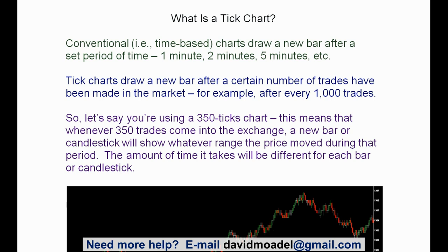Tick charts, on the other hand, draw a new bar or candlestick after a certain number of trades or transactions have been made in the market. For example, after every thousand trades — though it doesn't have to be a thousand; it's whatever you set it to.